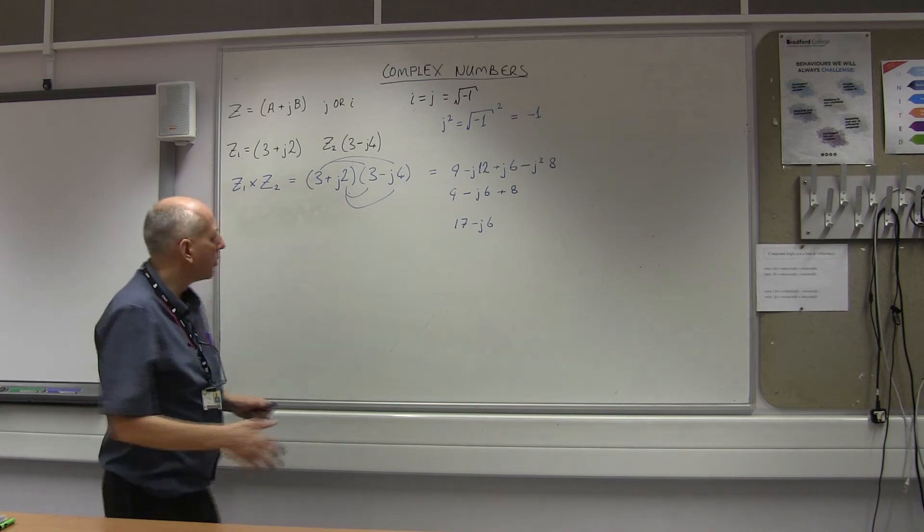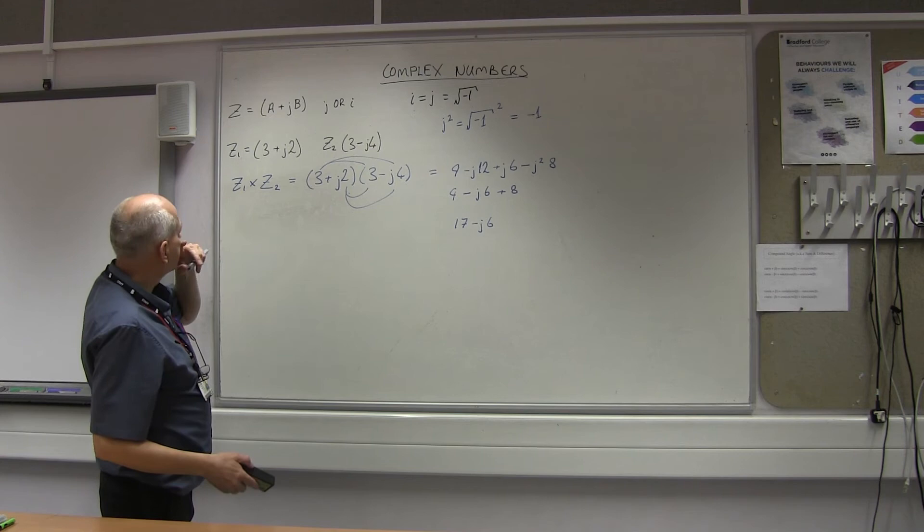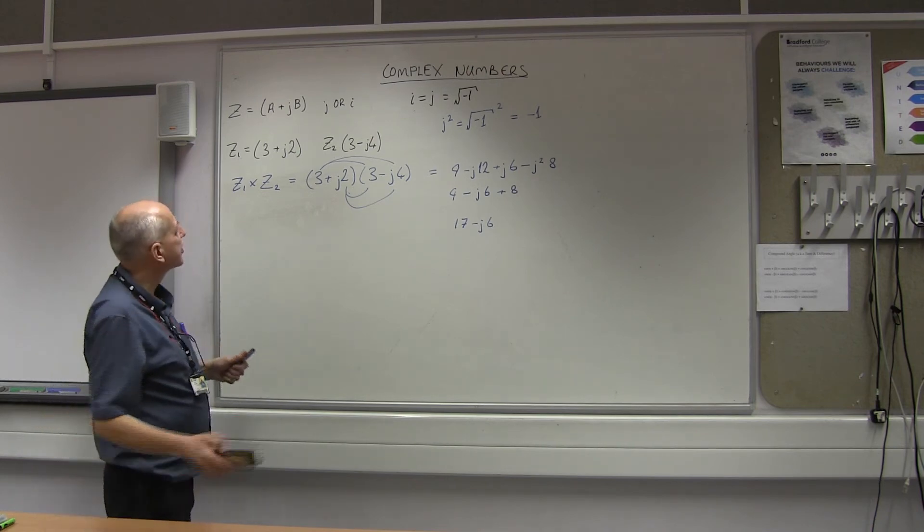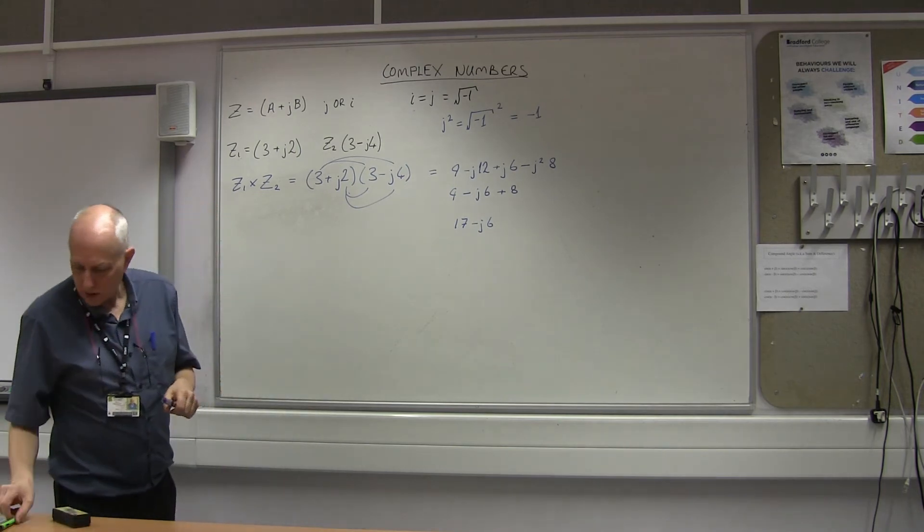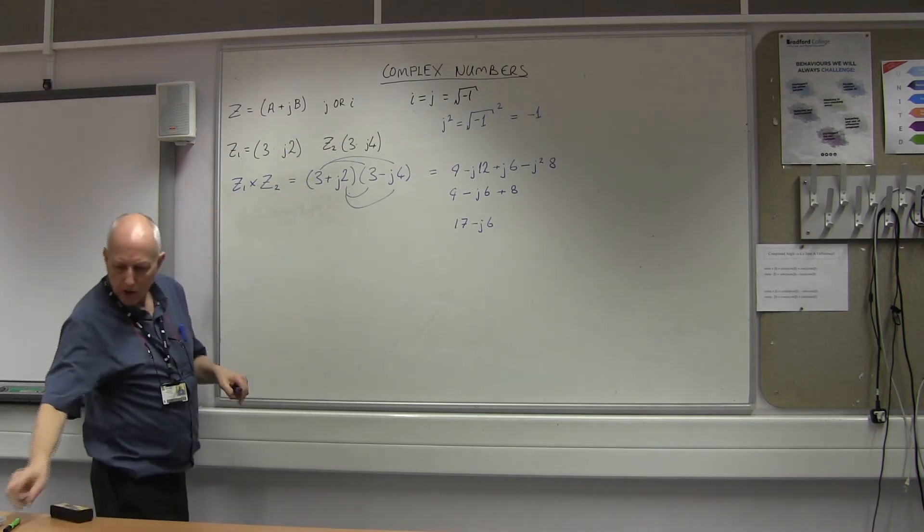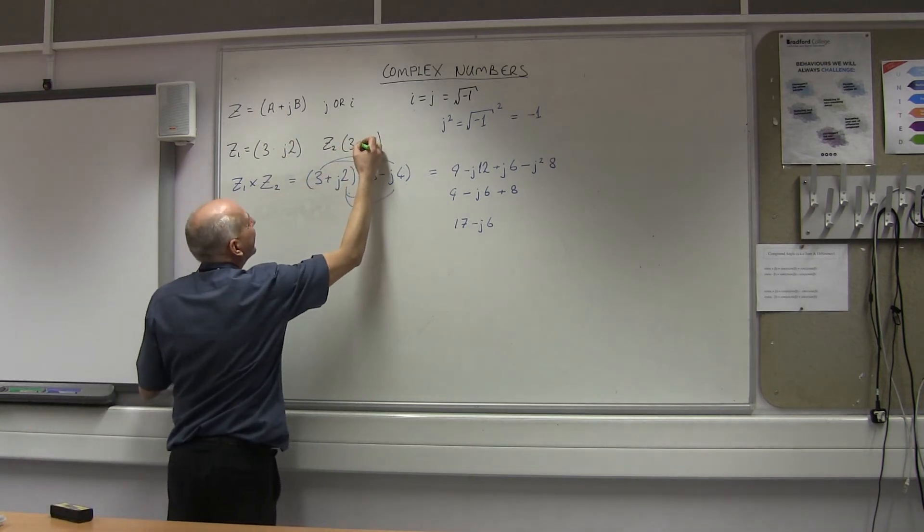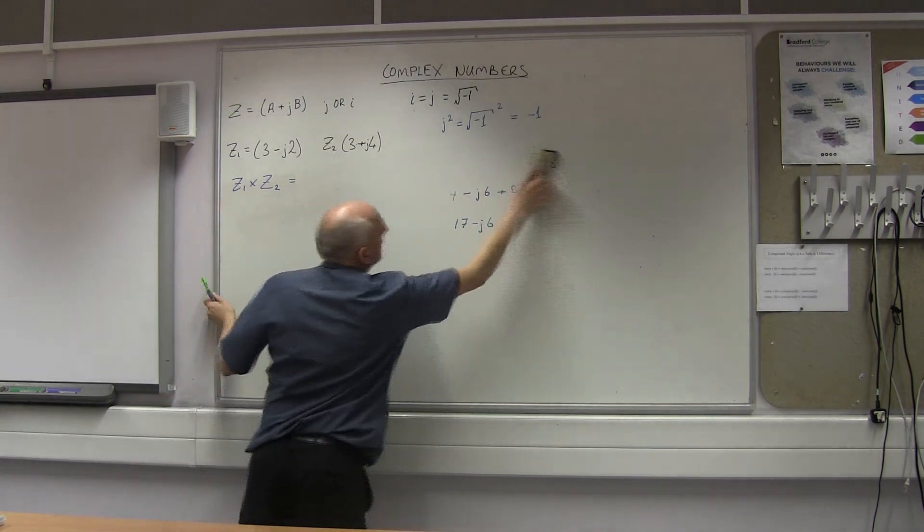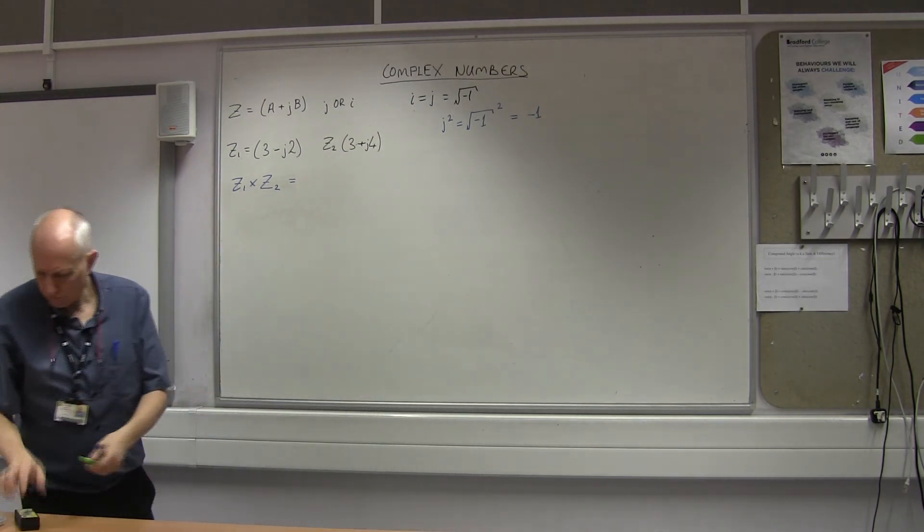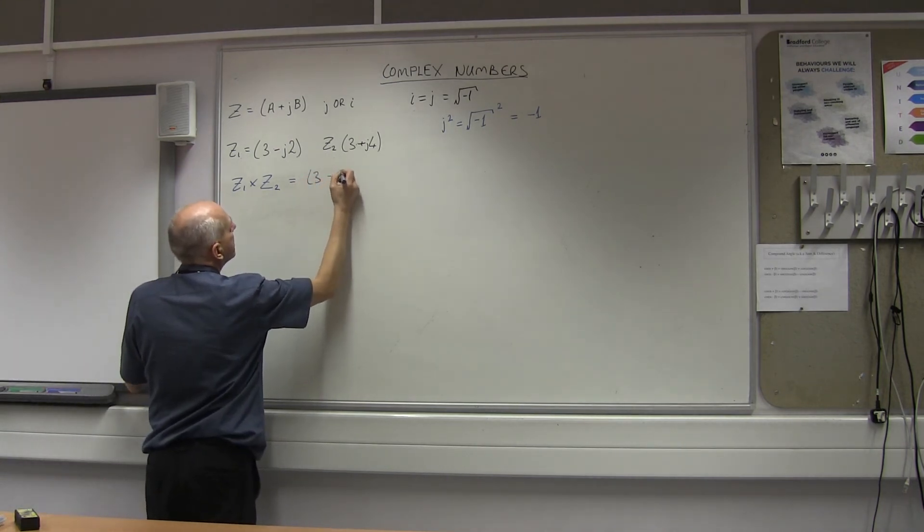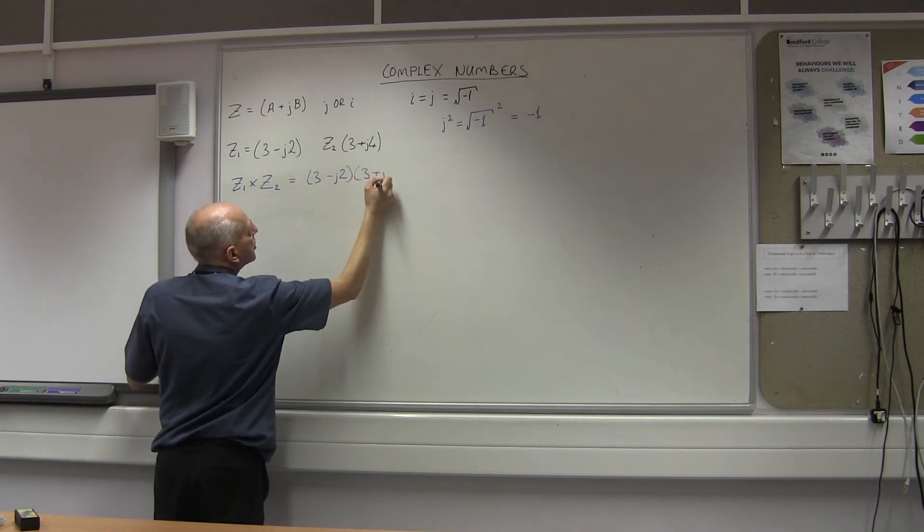Let's do another quick example just to cement this. Let's change the signs - change both signs. I realize I think we need to rub that one out. That one's a plus, that one's a minus now. Let's just clear all this out. So we've now got 3 minus J2 times 3 plus J4.